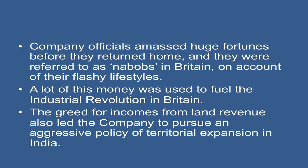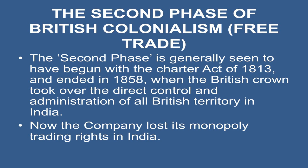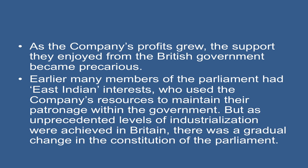The second phase is generally seen to have begun with the Charter Act of 1813 and ended in 1858, when the British Crown took over direct control and administration of all British territory in India. The company lost its monopoly trading rights in India. As the company's profits grew, the support they enjoyed from the British government became precarious. Earlier, many members of Parliament had East Indian interests who used the company's resources to maintain their patronage within the government.